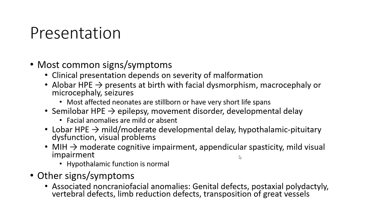Lobar holoprosencephaly presents with moderate developmental delay, hypothalamic-pituitary dysfunction, and visual problems. The middle interhemispheric form presents with moderate cognitive impairment, spasticity, oromotor impairment, and hypothalamic dysfunction. Other associated signs and symptoms include congenital heart anomaly, genital defects, postaxial polydactyly, vertebral defects, limb reduction defects, and transposition of the great vessels.